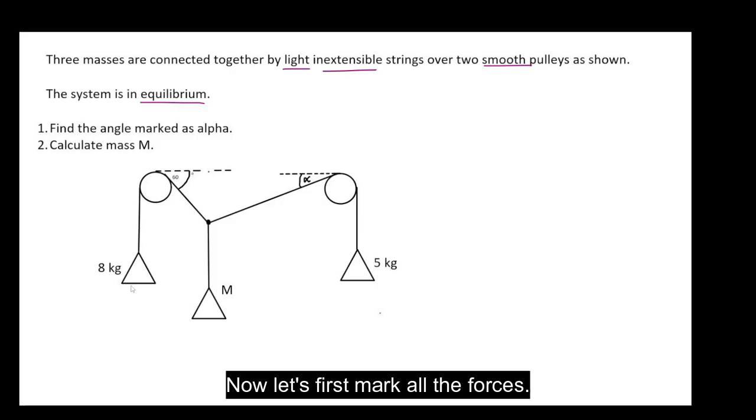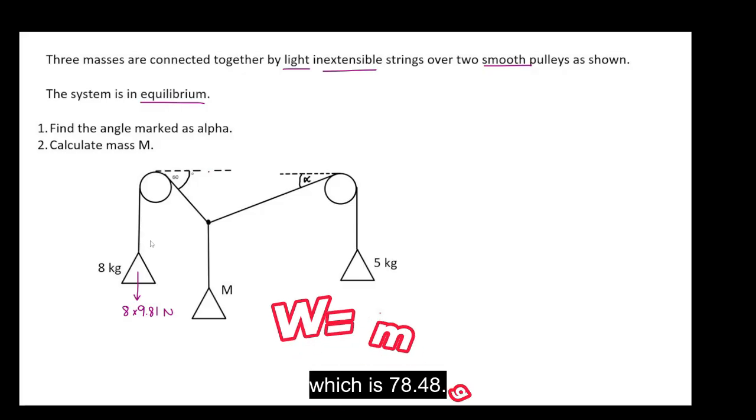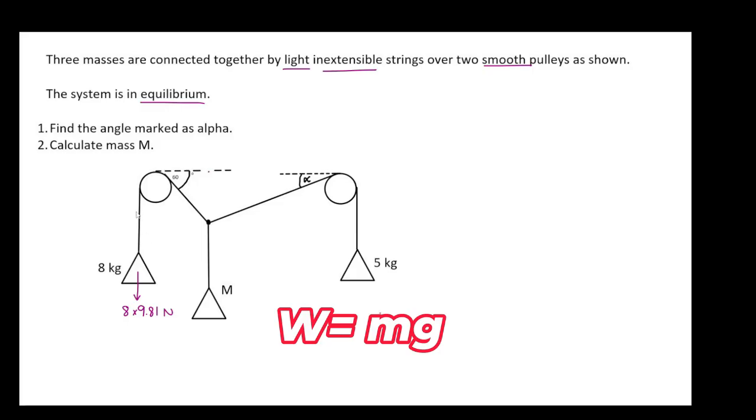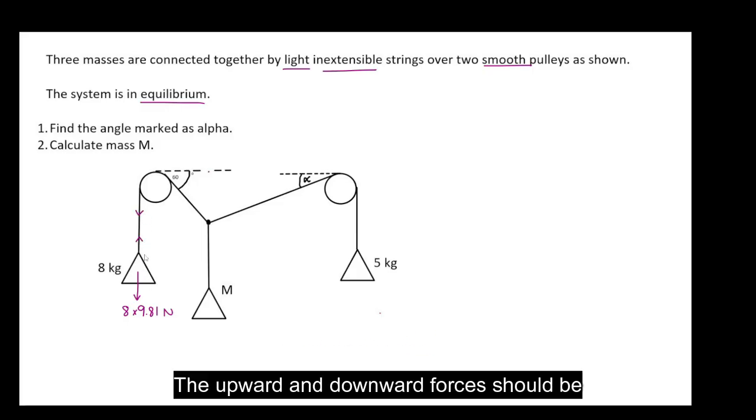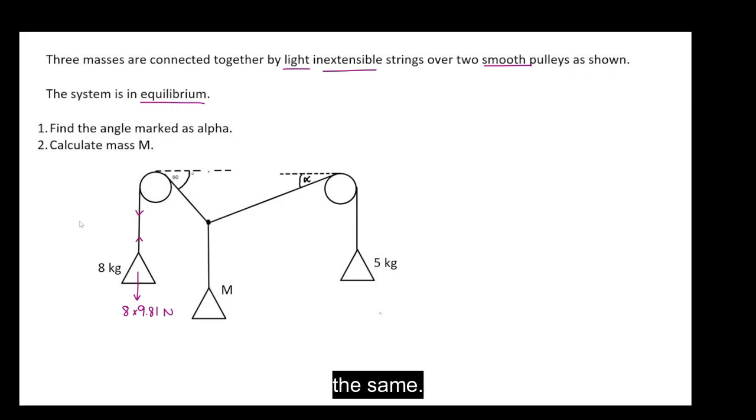Now let's first mark all the forces. So we know the weight of this eight kilogram object is eight times 9.81 newtons, which is 78.48. We know because the system is in equilibrium, the upward and downward forces should be the same.